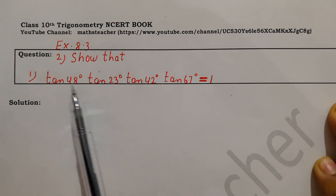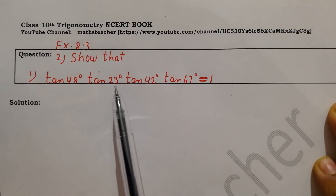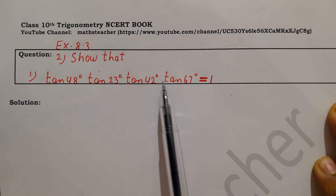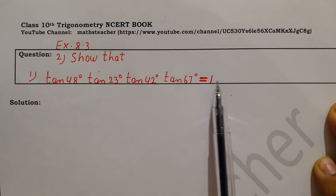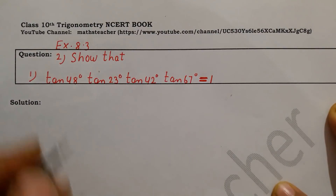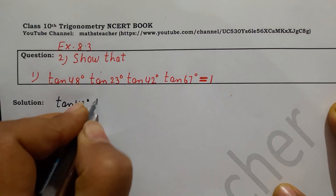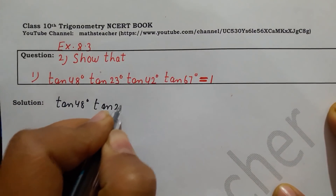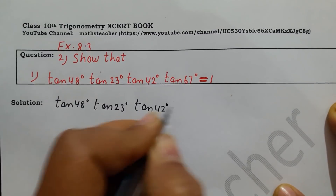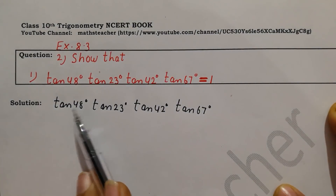We have to show that tan 48°, tan 23°, tan 42°, and tan 67° equals 1. If we solve them, how much is it? 1. So here in the first question we write tan 48°, tan 23°, tan 42°, and tan 67°. So here there are 4 terms in multiplication.